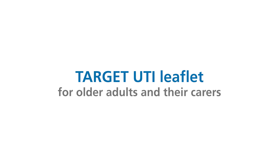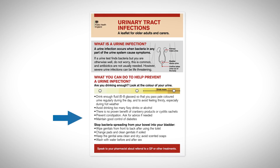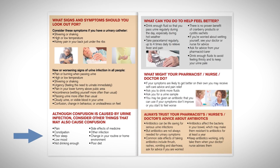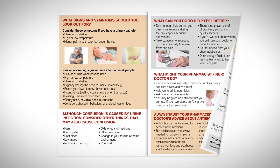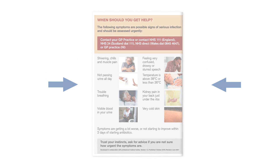Public Health England has produced a leaflet called the Target UTI leaflet for older adults and their carers. This can be used with patients and their carers to explain what a UTI is, suggest ways to help prevent further UTIs, outline the signs and symptoms to look out for, causes of confusion in older people, self-care options to reduce symptoms, and information on antibiotics. The safety netting advice details the signs of deterioration, including sepsis, that patients and carers should look out for when diagnosed with an infection.